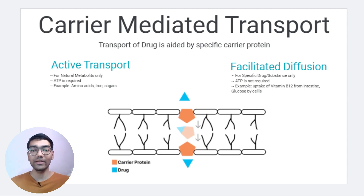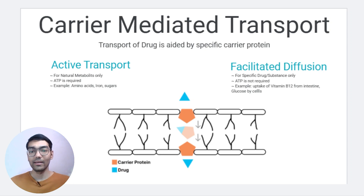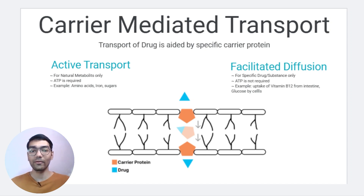No other drug can bind with the carrier protein if it is not meant to. Examples include glucose uptake by cells and absorption of vitamin B12 from the intestine. Looking at the difference between active transport and facilitated diffusion, it is quite simple: both share the same mechanism, but active transport requires energy while facilitated diffusion does not.